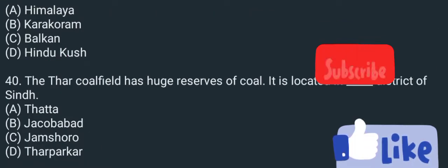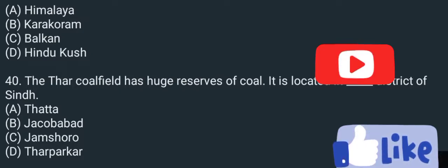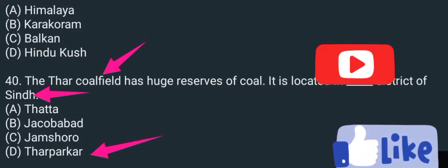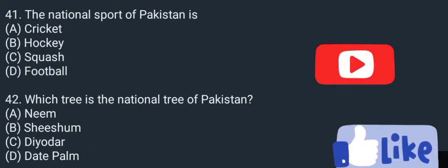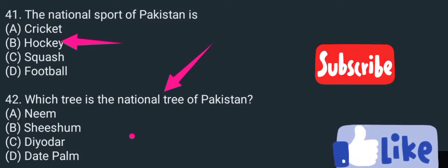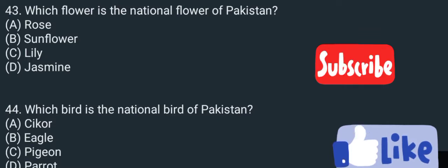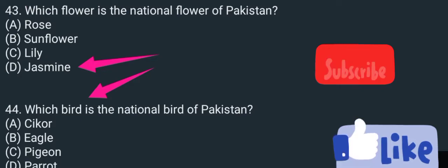Where are the coal fields located? Which district of Sindh has coal fields present? That is the Tharparkar area. Pakistan's national sport is Hockey. Pakistan's national tree is Deodar. Pakistan's national flower is Jasmine, and the national bird is Chakor.